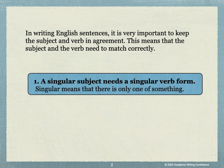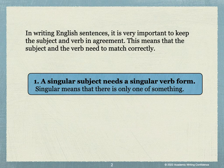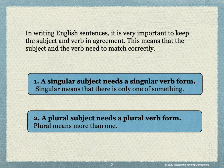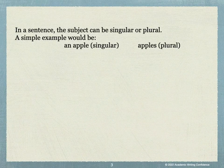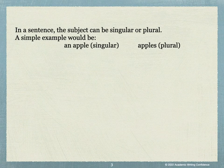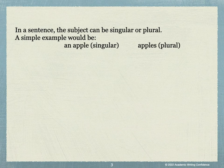A singular subject needs a singular verb form. Singular means that there's only one of something. A plural subject needs a plural verb form. Plural means more than one. In a sentence, the subject can be singular or plural. A simple example would be an apple, which is singular, and apples, which is plural.